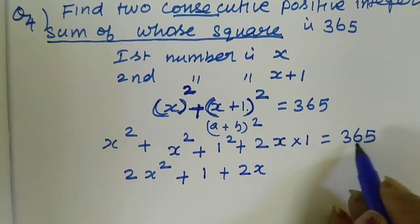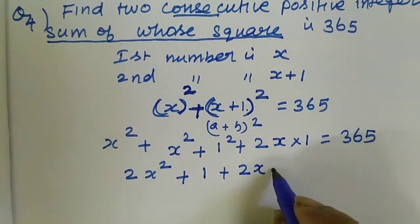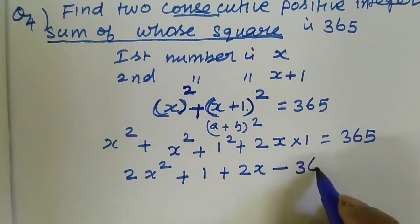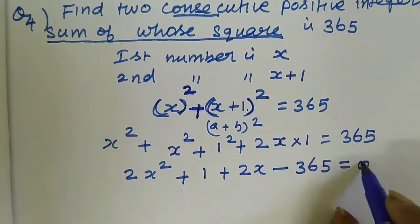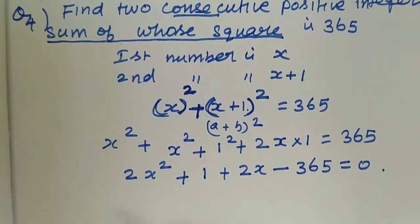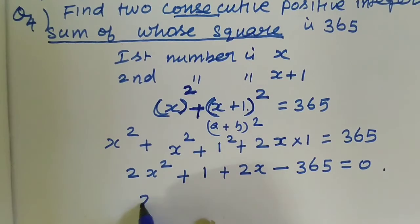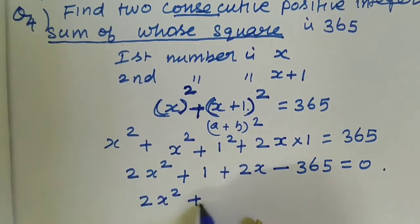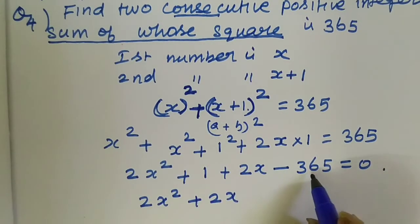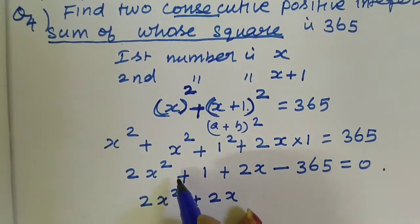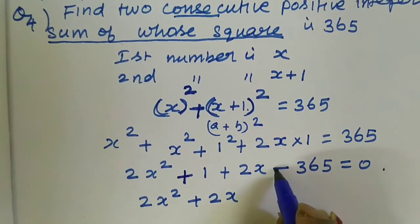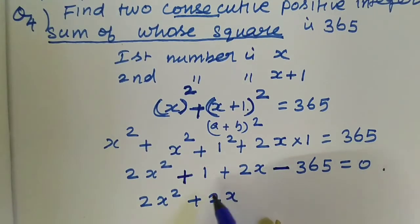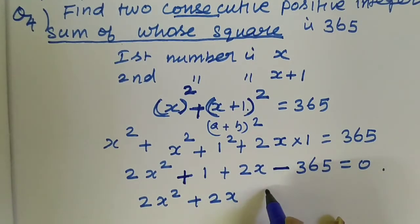Taking 365 to the left hand side of the equation, it becomes minus 365, equal to 0. Now we have to factorize this equation: 2x squared plus 2x plus 1 minus 365. Since the signs are opposite, we subtract 1 from 365, giving an answer of 364.